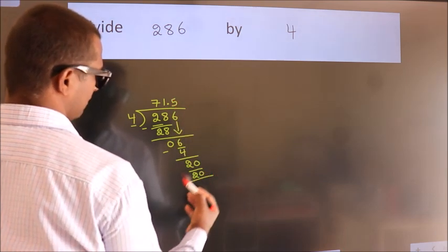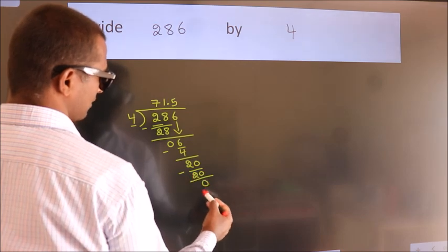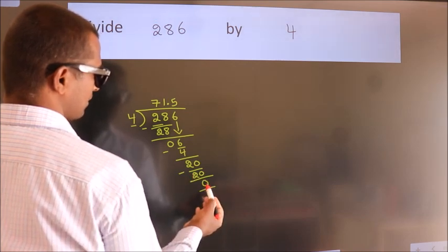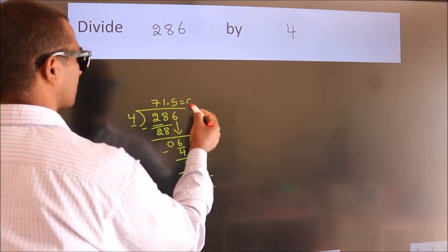Now we subtract, we get 0. We got remainder 0, so this is our quotient.